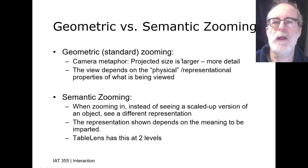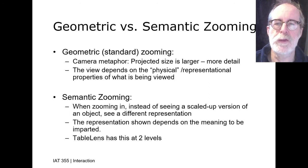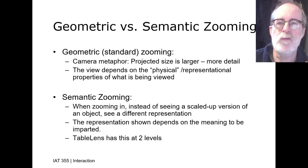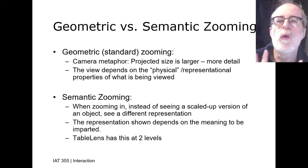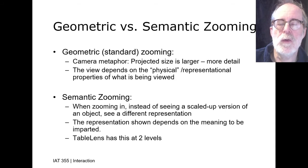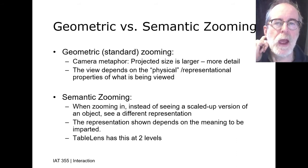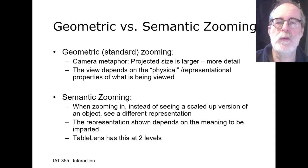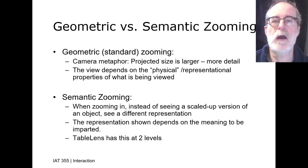There are two styles of zooming. The first is geometric or standard zooming, where the camera metaphor is brought to bear: zooming in means the projected size of whatever the camera is pointed at gets larger. In filmmaking terms, we don't distinguish between zooming and dollying here; we simply use zooming as a means of controlling the scaling of the object.